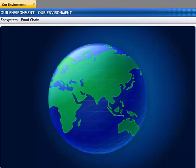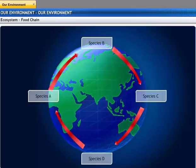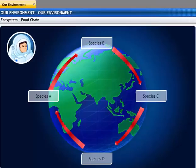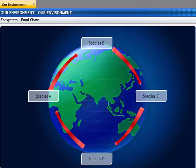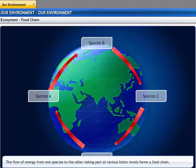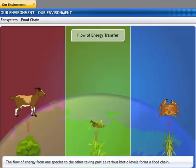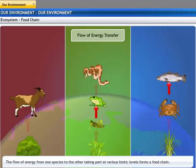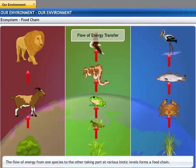We have spoken about the groups of organisms in an ecosystem. This brings us to a series or a chain. What is this chain? It is a flow of energy from one species to another and so on. You have seen organisms that feed on one another to sustain themselves in the ecosystem — this develops a food chain.